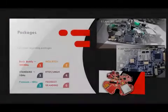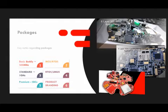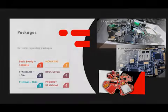There are three packages in this gig. One is the 500MHz buddy package, another is the 1GHz buddy package, and the third one is the beast buddy package.